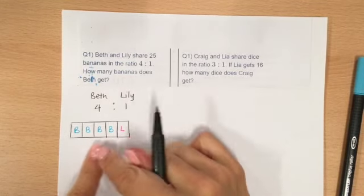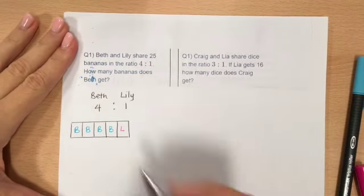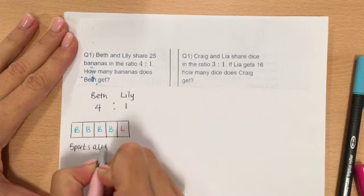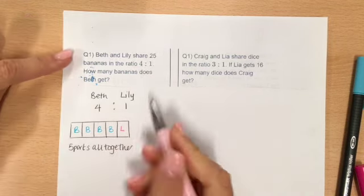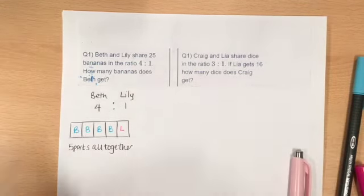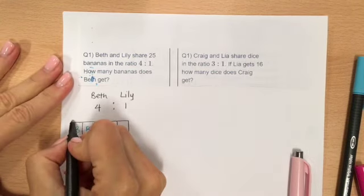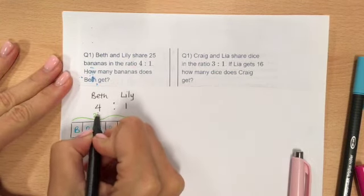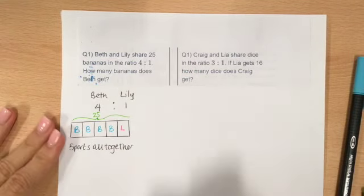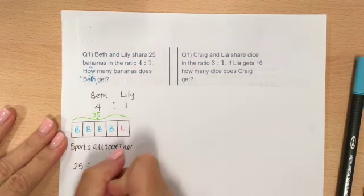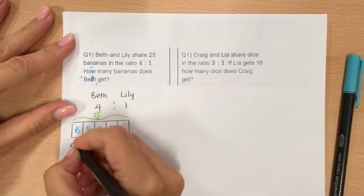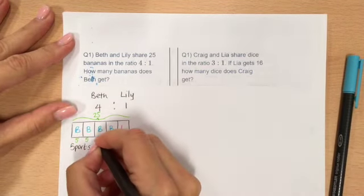She's got 4 parts, she's got 1, so there are 5 parts altogether. Now it says that there are 25 bananas in total, so that means this whole bar model represents 25. Now there are 5 parts to this bar model, so the calculation that you would need to do here is 25 shared by 5, which is 5. So each one of these bars represents 5 bananas.